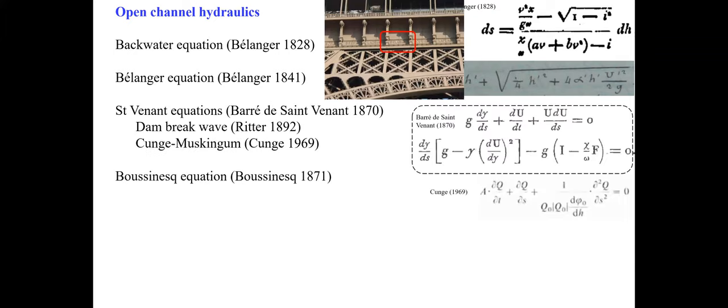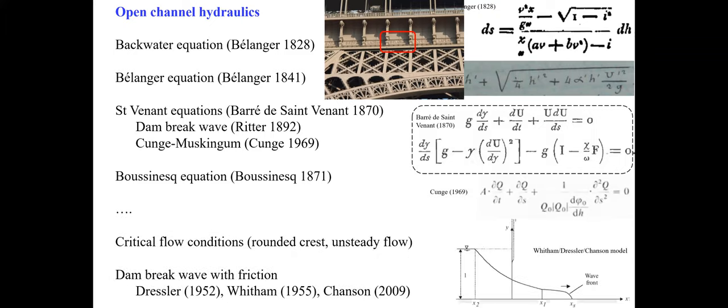In open channel hydraulics, some traditional forms of theoretical modeling include the backwater equation developed in 1828 and the Belanger equation for hydraulic jump developed in 1841, both by French engineer Jean-Baptiste Belanger, whose name is engraved on the Eiffel Tower. There is also, for unsteady open channel flow, the Saint-Venant equation and the Boussinesq equation. More recently, there have been theoretical developments in relation to critical flow conditions and drawdown.